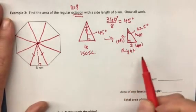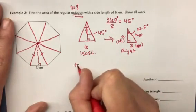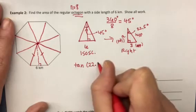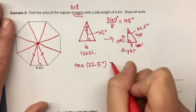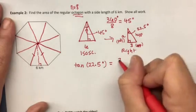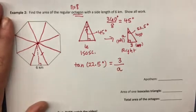All right. So the tangent of 22.5. So the tangent of our angle is equal to the opposite side over the adjacent side. And once you get to this point, these problems aren't that different.